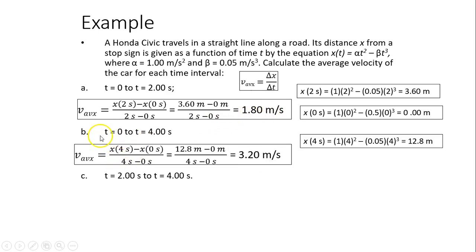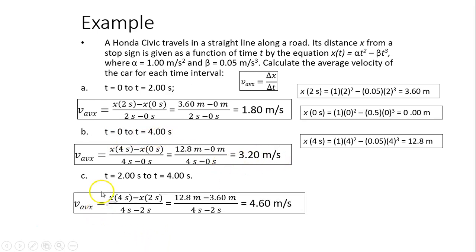Similarly, you do for b, t equals 0 to t equals 4. You should have 3.2 meters per second. And lastly, for c, it's the same idea.